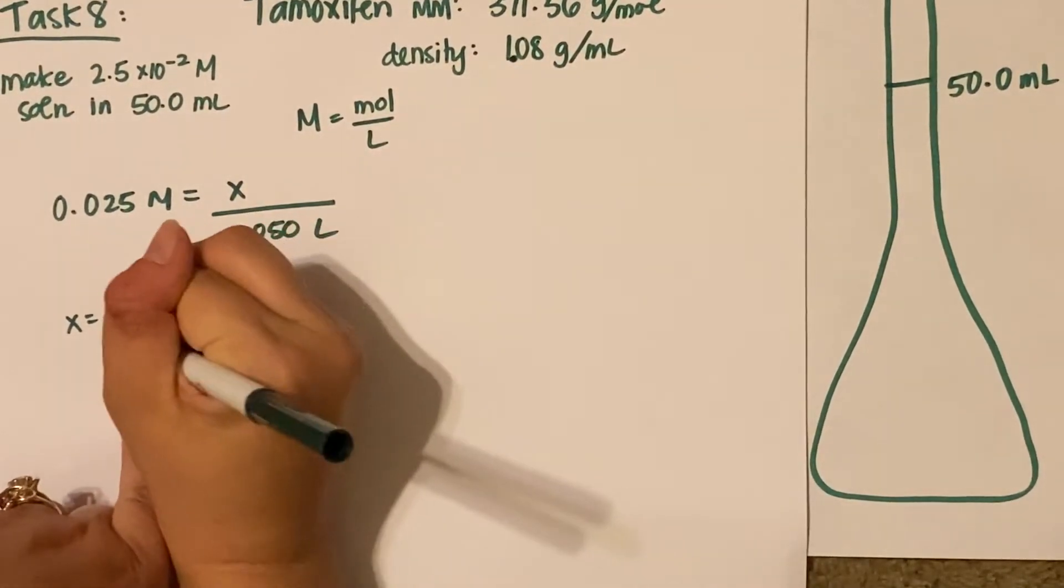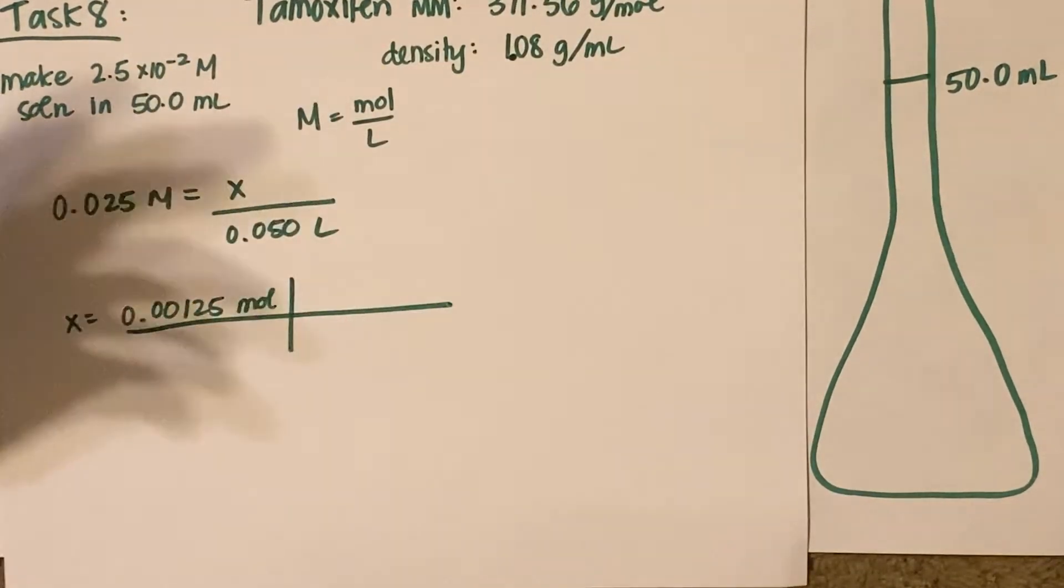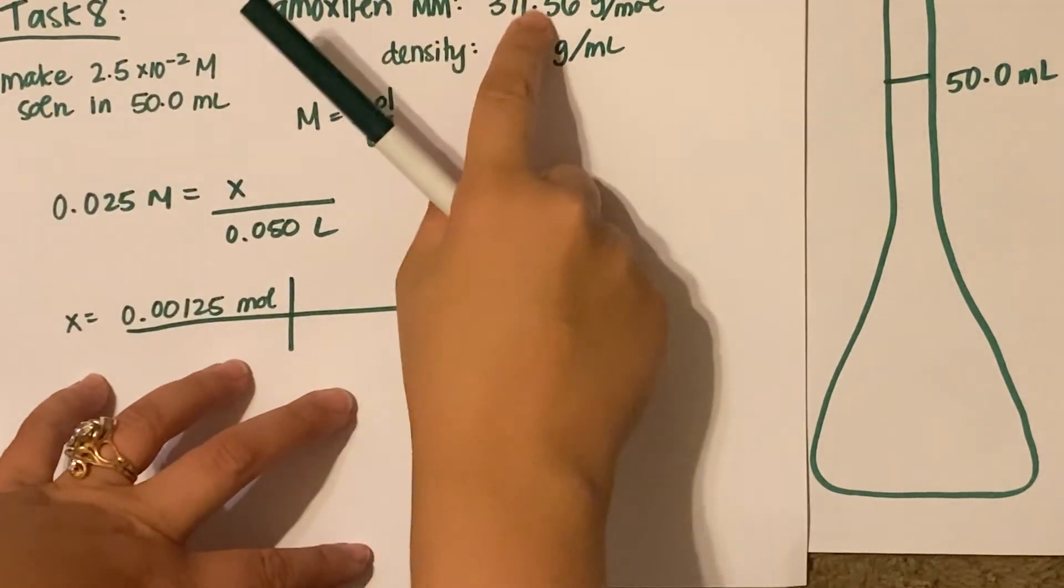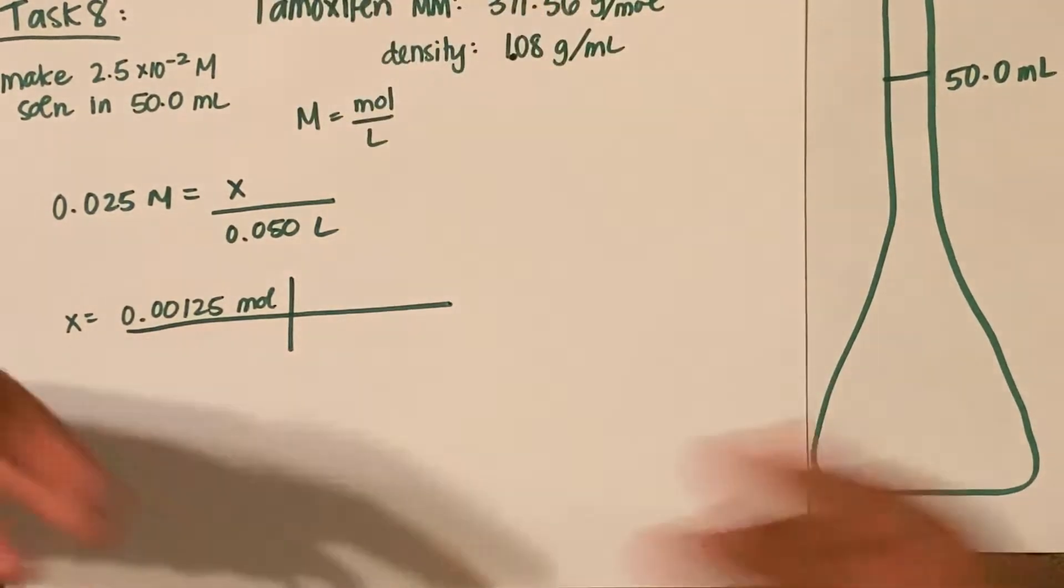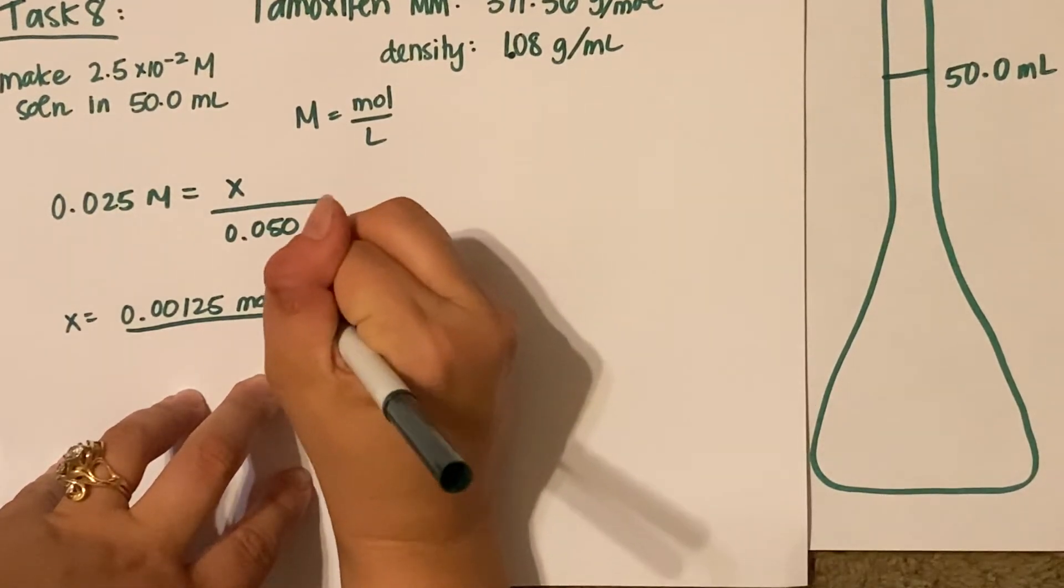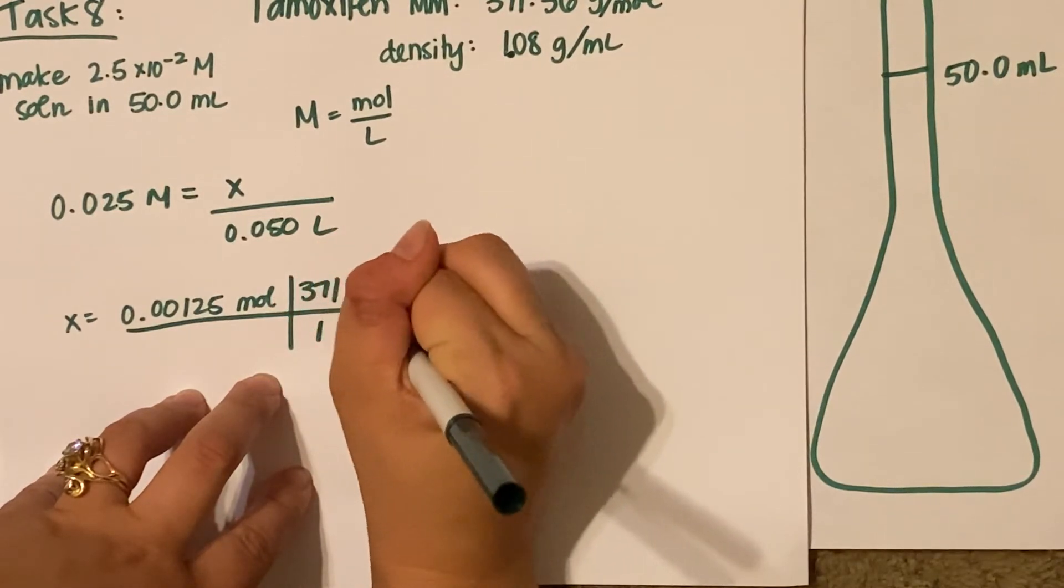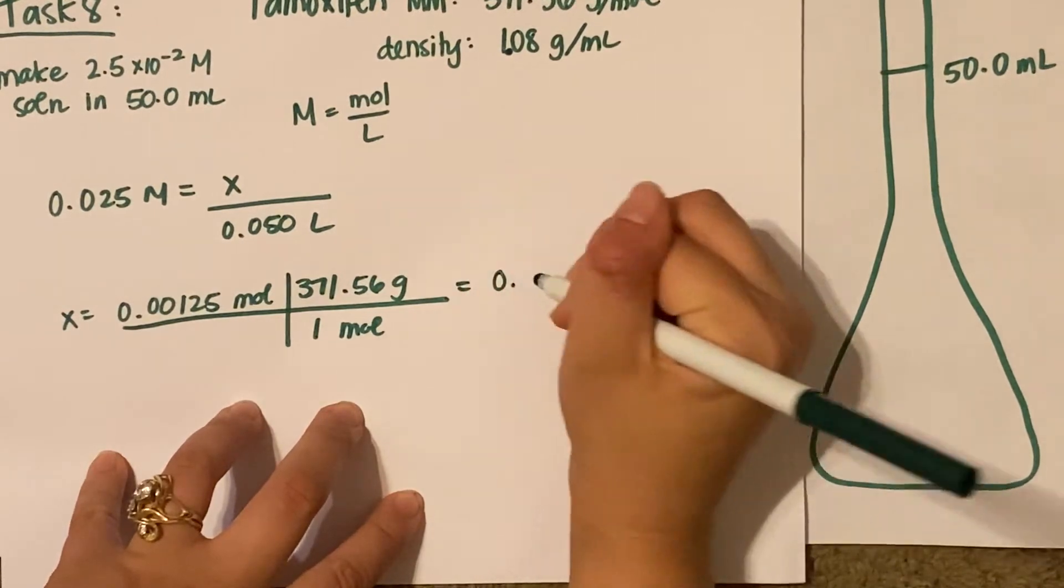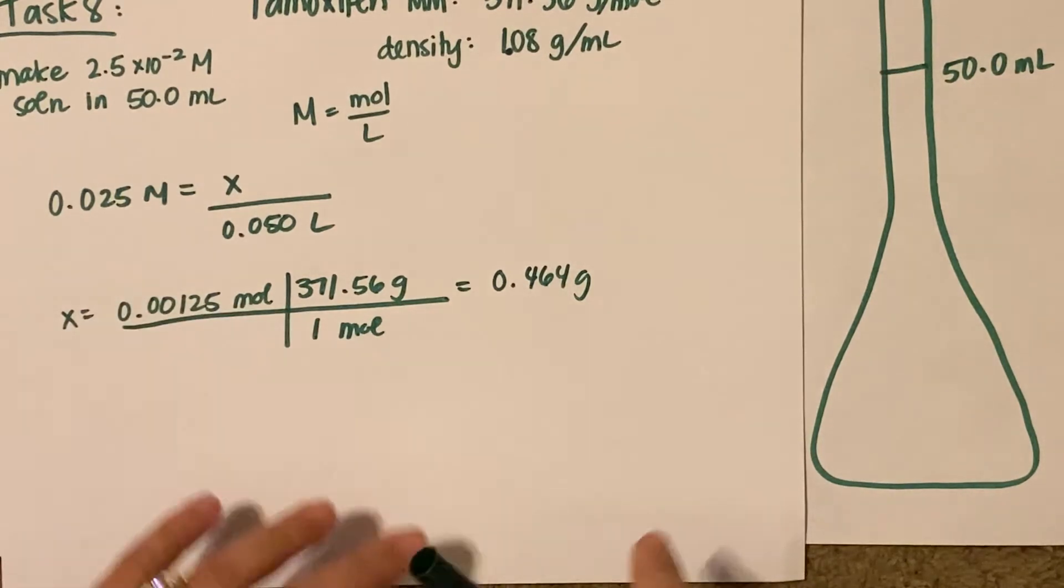You just take your moles and convert to grams using your molar mass. This is just an example of tamoxifen - don't use this molar mass if this is not your drug. We have 371.56 grams per mole, and you multiply these two numbers together to get 0.464 grams of tamoxifen that you would add to this volumetric flask.